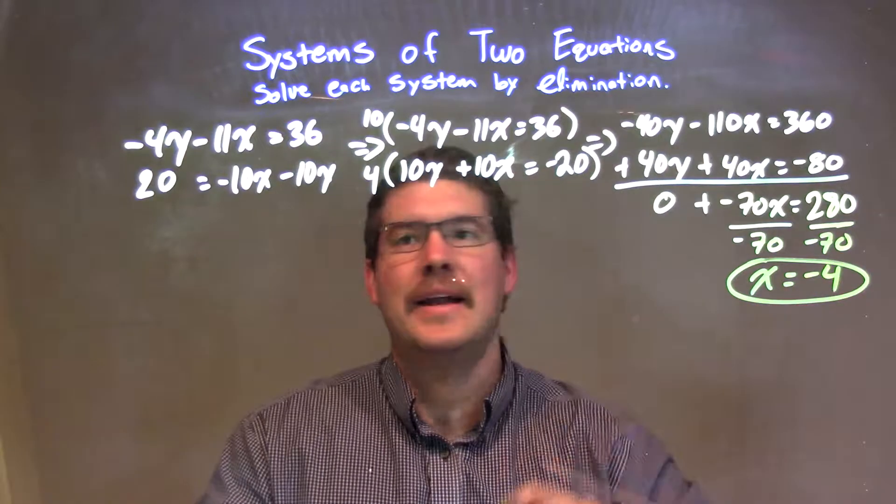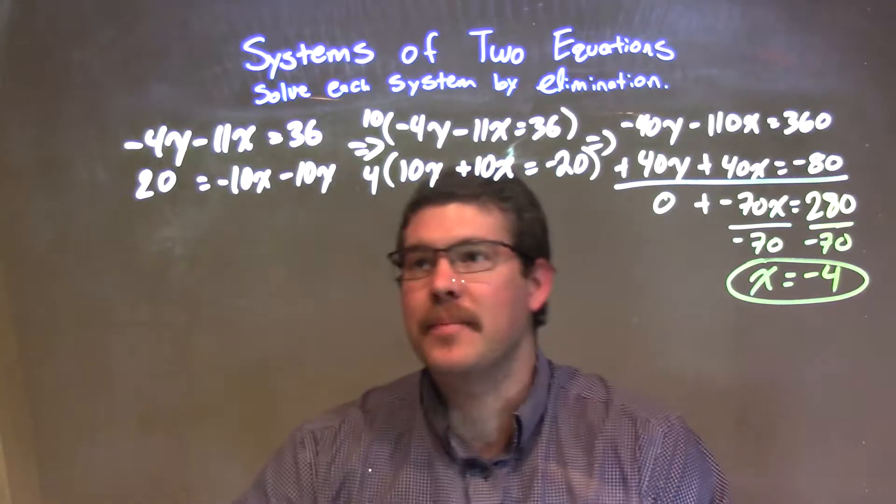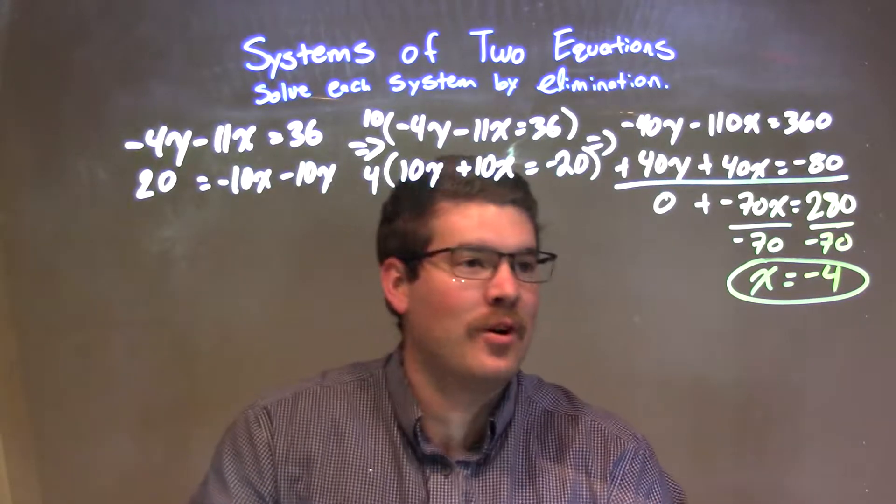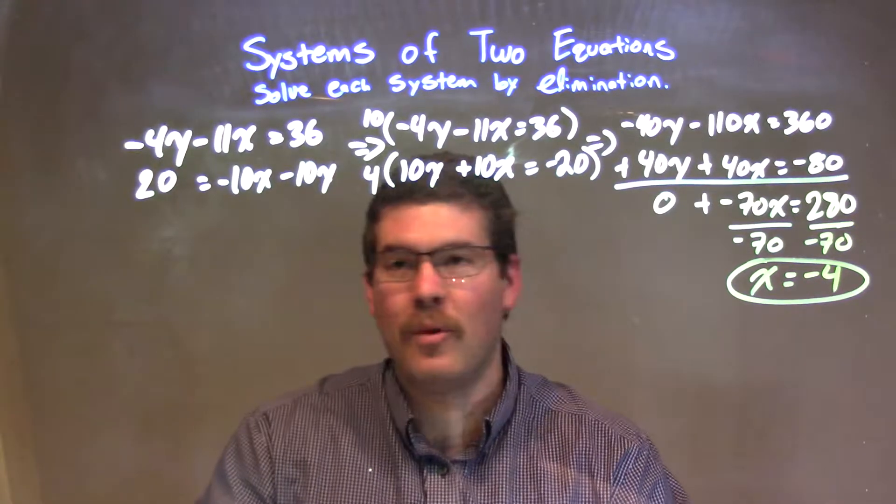So we have x equal to negative 4, which is great. Now what we're going to do is plug that into one of my equations and solve for the other variable, y.